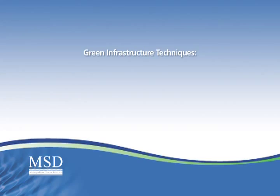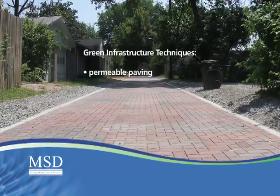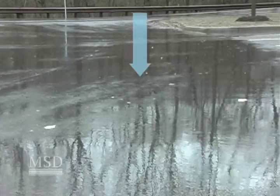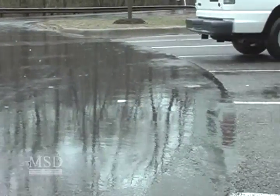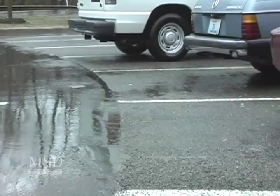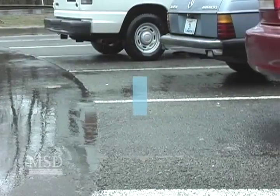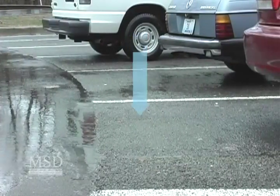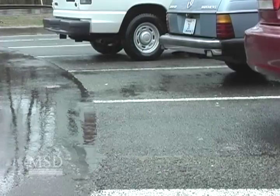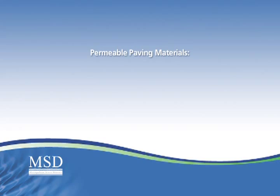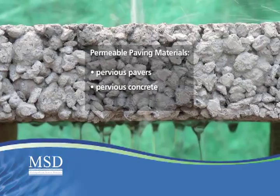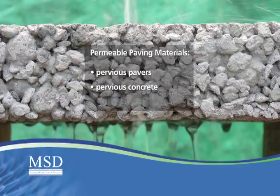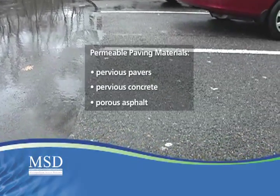Green infrastructure techniques include permeable paving. Traditional paving blocks water from reaching the ground, but permeable paving allows rainwater to seep through the paved surface and into the soil below. Permeable paving materials include pervious pavers, pervious concrete, and porous asphalt.